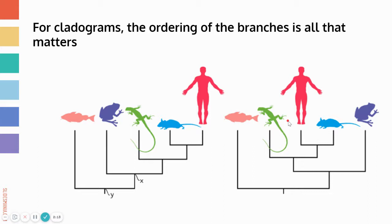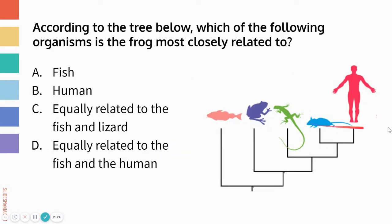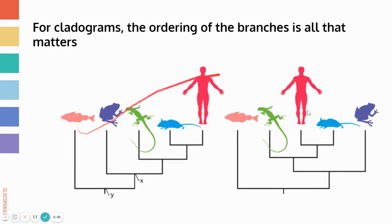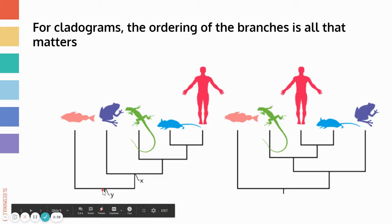When looking at different ways to draw cladograms, one thing to keep in mind is that the order organisms appear on the top is irrelevant — it's the ordering of the branches that's the only thing that matters. It's easy to get thrown off by seeing the frog next to the fish and the lizard, but if you look at these two trees they both convey the exact same information even though they look very different.